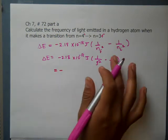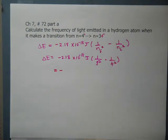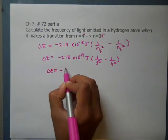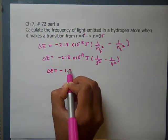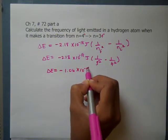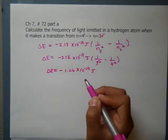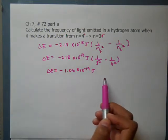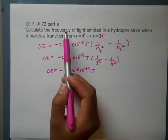Our energy is negative 1.06 times 10 to the negative 19 joules. However, this is not what the question is asking for. The question is asking for the frequency.